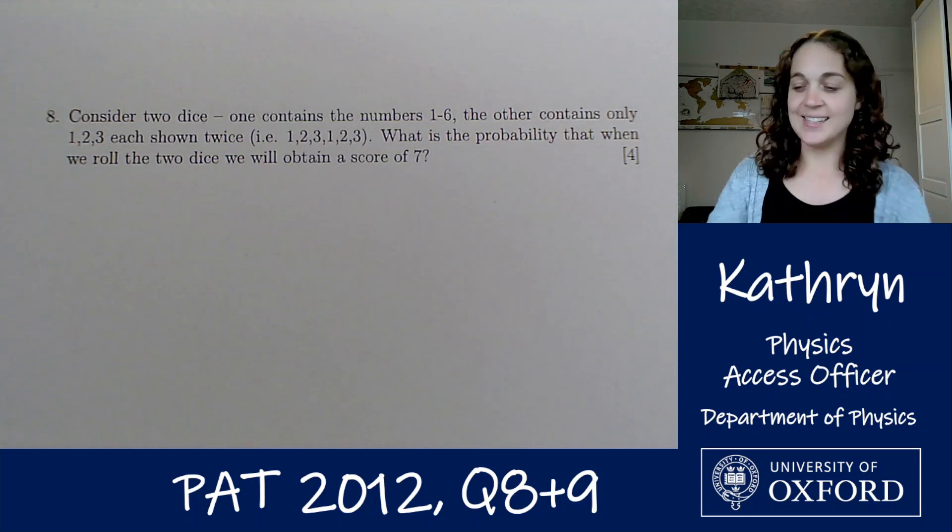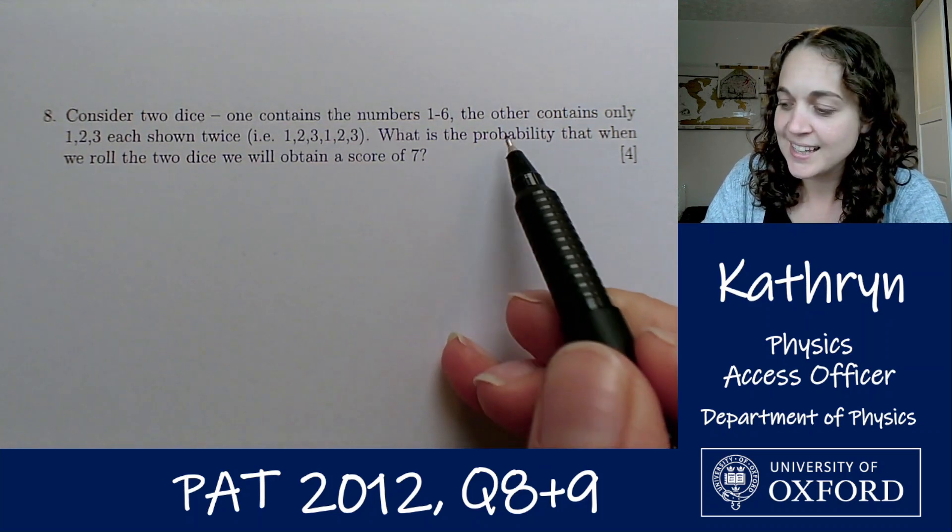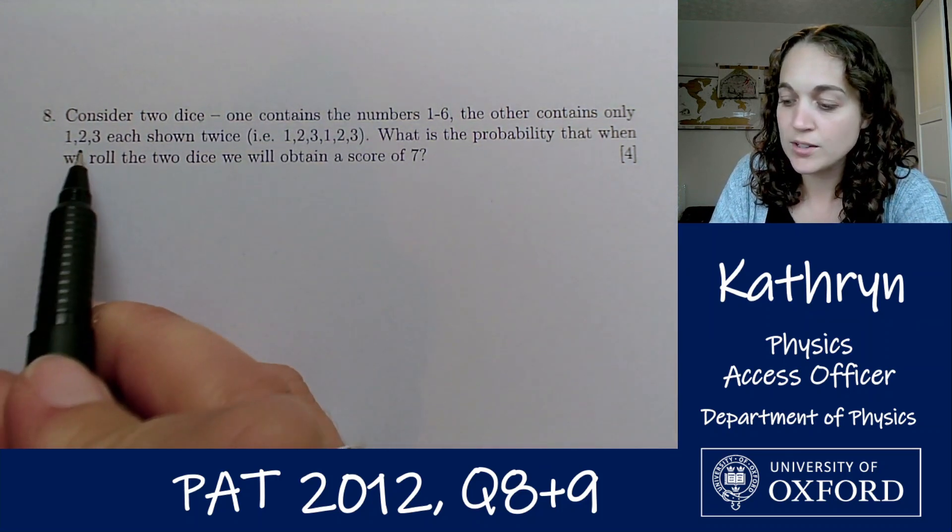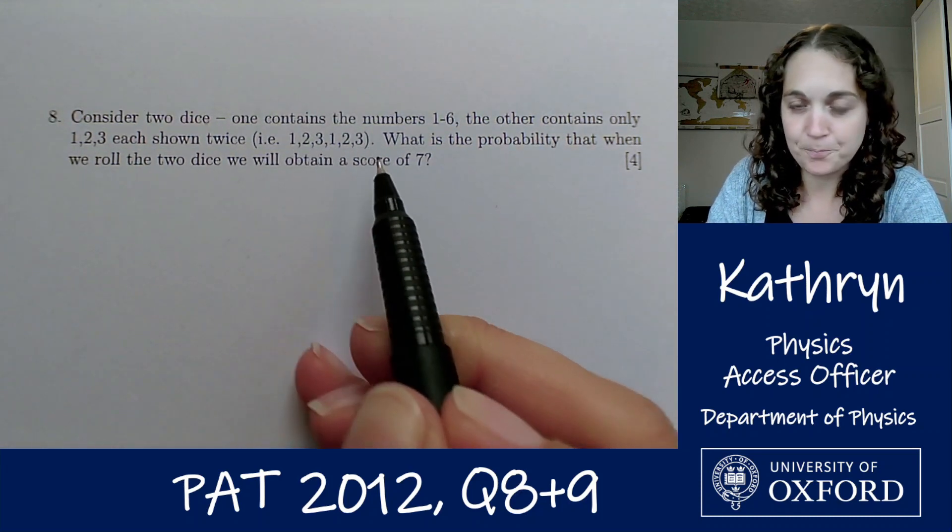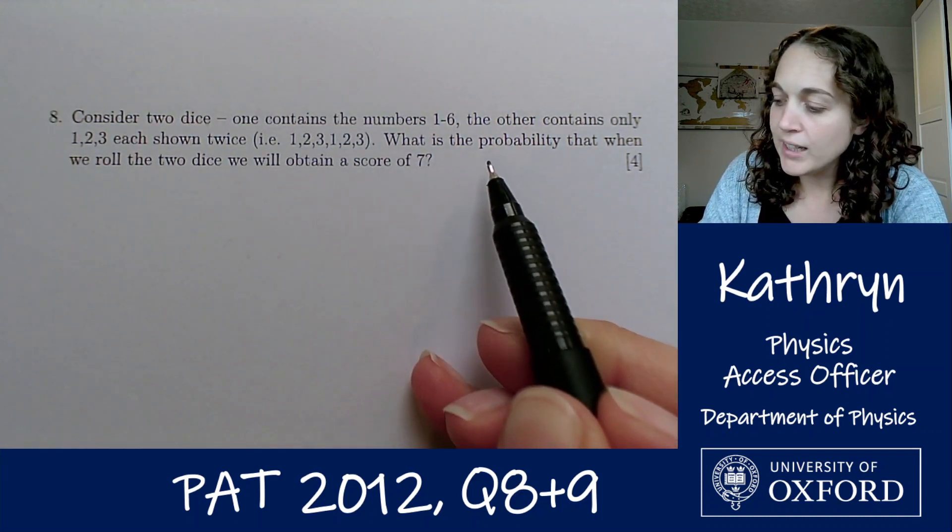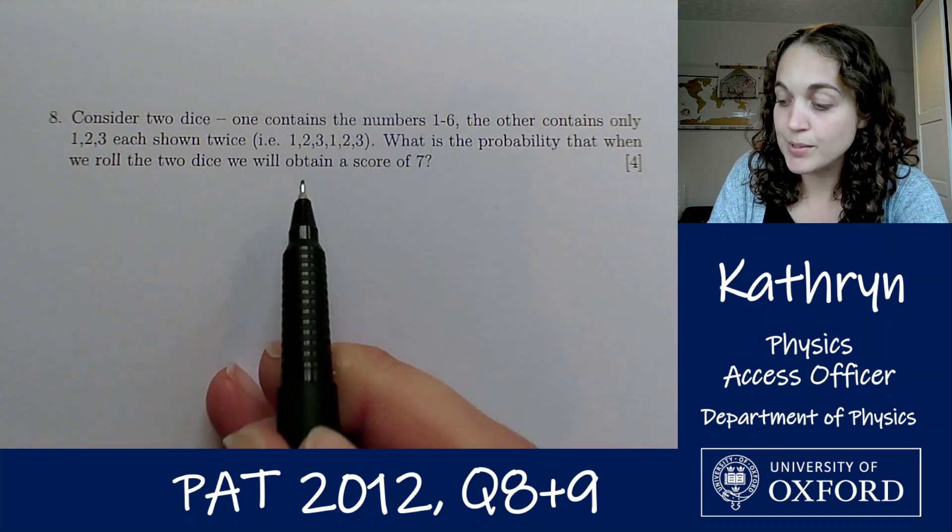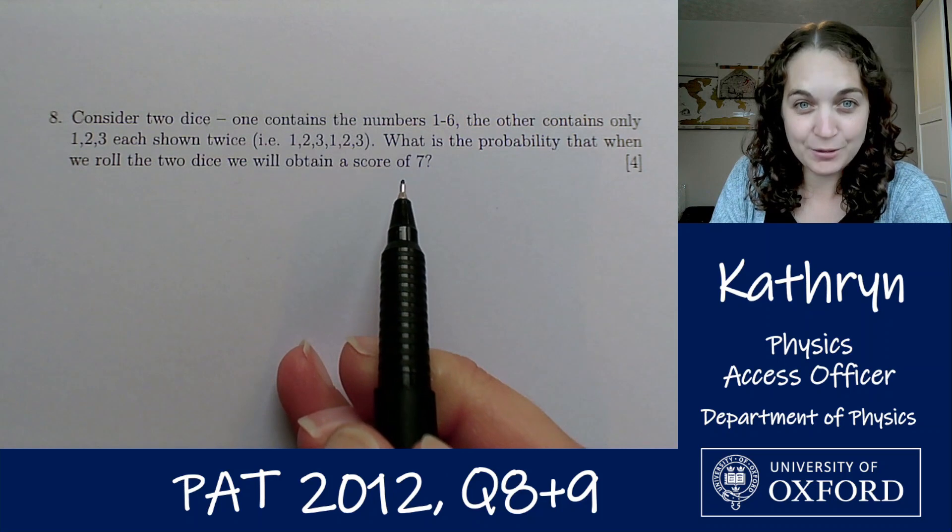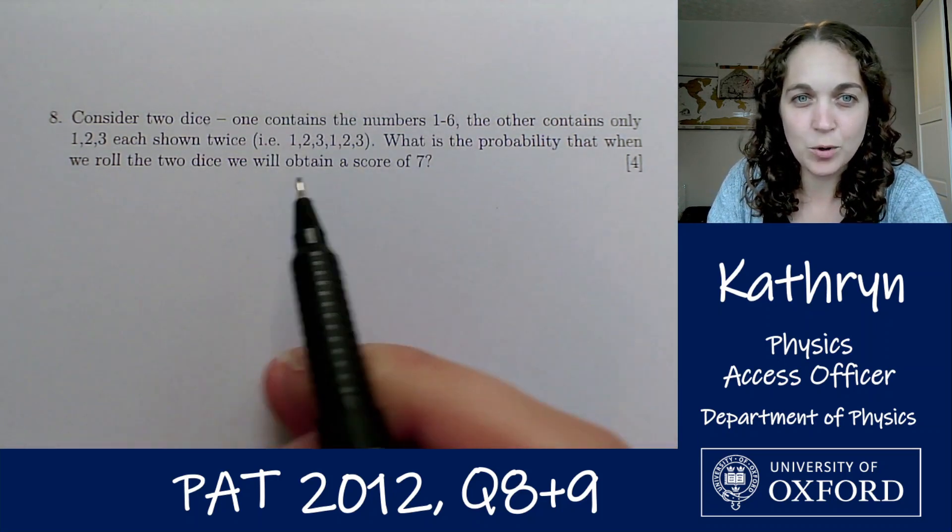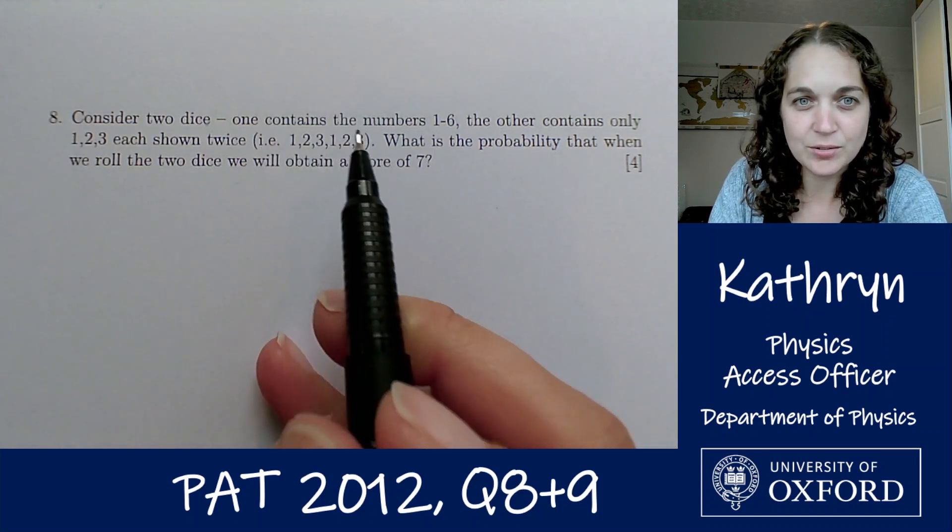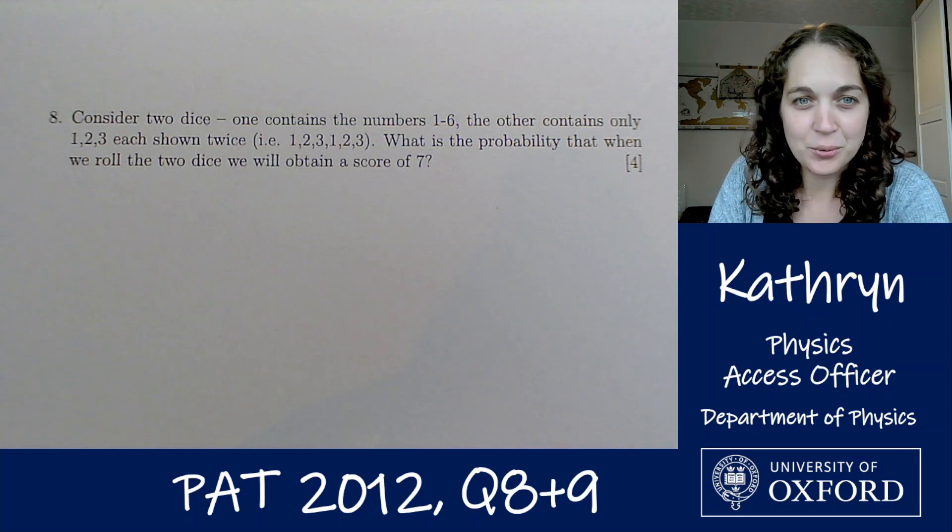Question 8 says, consider two dice. One contains the numbers 1 to 6, the other contains only 1, 2, 3 each shown twice, i.e. 1, 2, 3, 1, 2, 3. What is the probability that when we roll the two dice we will obtain a score of 7?